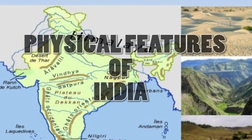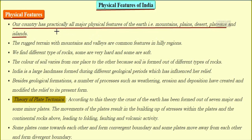Let's study about a new chapter called physical features of India. Our country has practically all the major physical features of the earth — mountains, plains, desert, glaciers, and islands. The rough terrain with mountains and valleys are common features in hilly areas. We find different types of rocks; some are very hard, some are very soft. The color of the soil also varies from place to place.